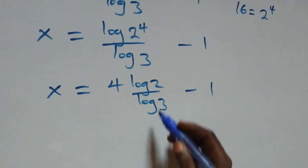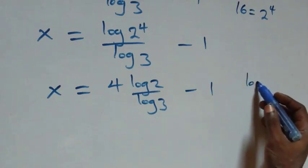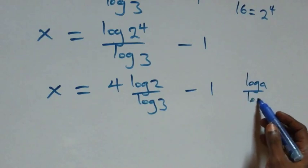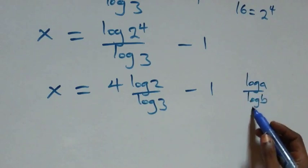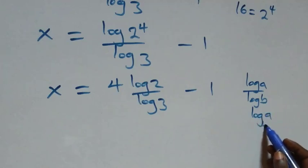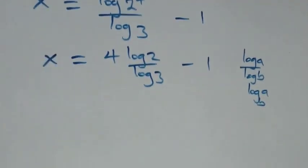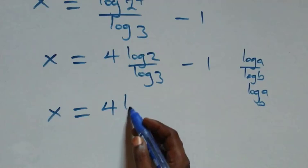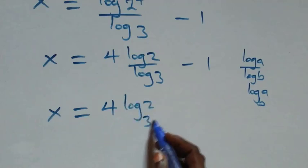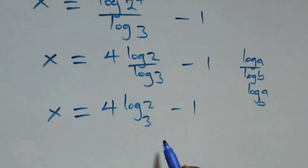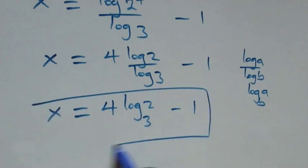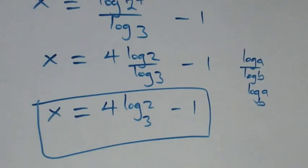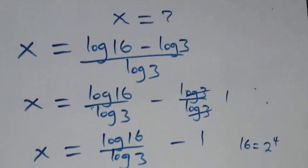Applying the change of base formula, where log a over log b can be written as log a to base b, what we have becomes x equals four times log 2 base 3, minus one. So the value of x in this problem is four log₃2 minus one. Now let's check if this satisfies the original equation.